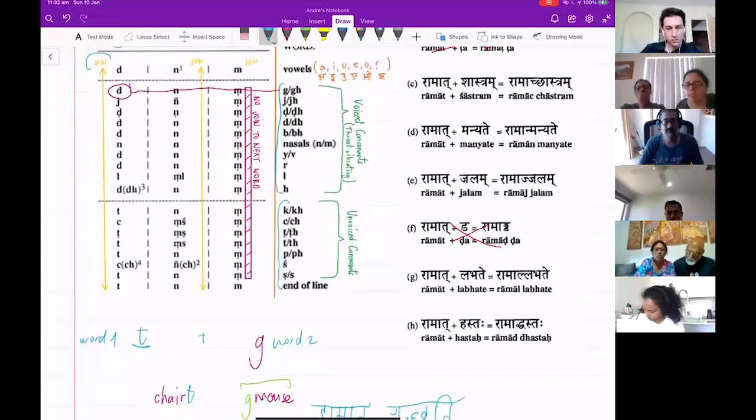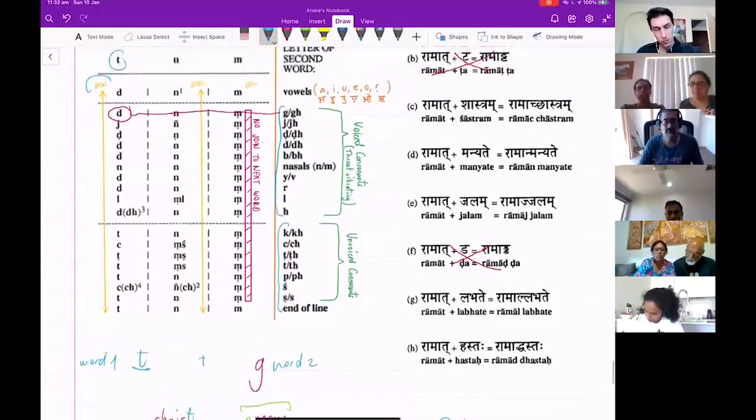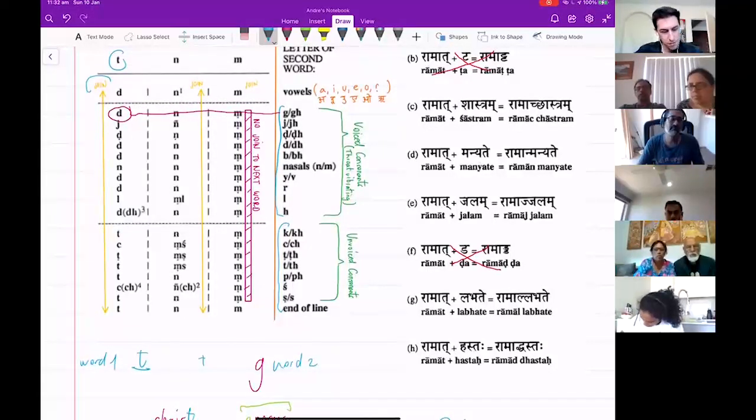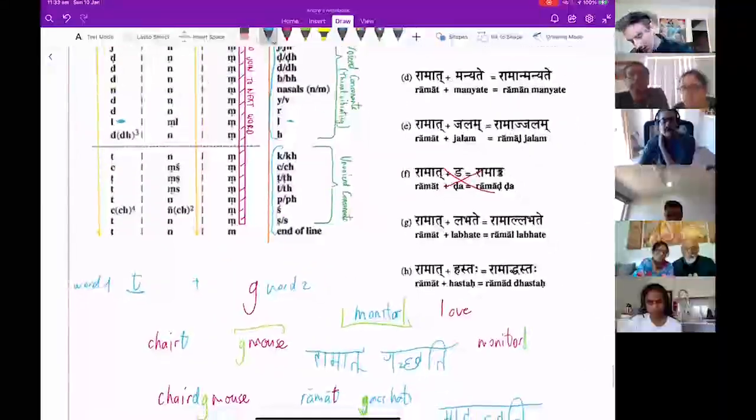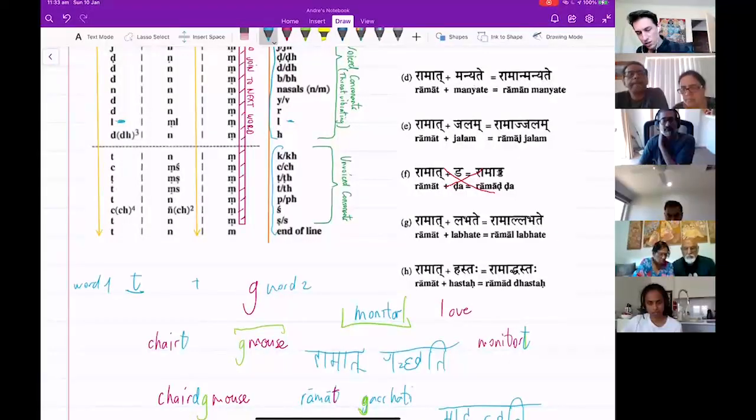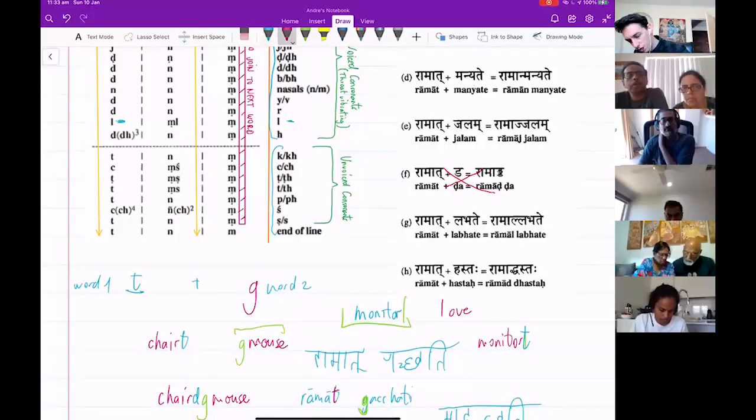So what does this mean for us? It means we need to look at this and create some English examples. Let's say this example, 'the monitor T'. So this T, when it joins an L, what's going to happen to the T? It's going to change into an L.